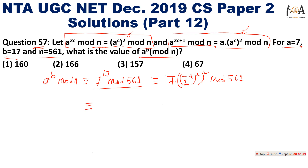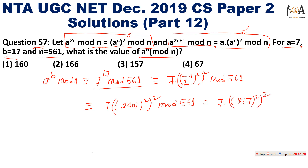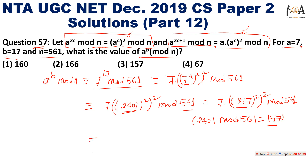If I solve 7^4, which is 7 × 7 × 7 × 7, I get 2401. So the expression becomes 7 · (2401)^2 whole squared mod 561. Now, 2401 mod 561 equals 157, so I can write this as 7 · (157)^2 whole squared mod 561. Further, 157^2 = 24,649, and again mod 561.